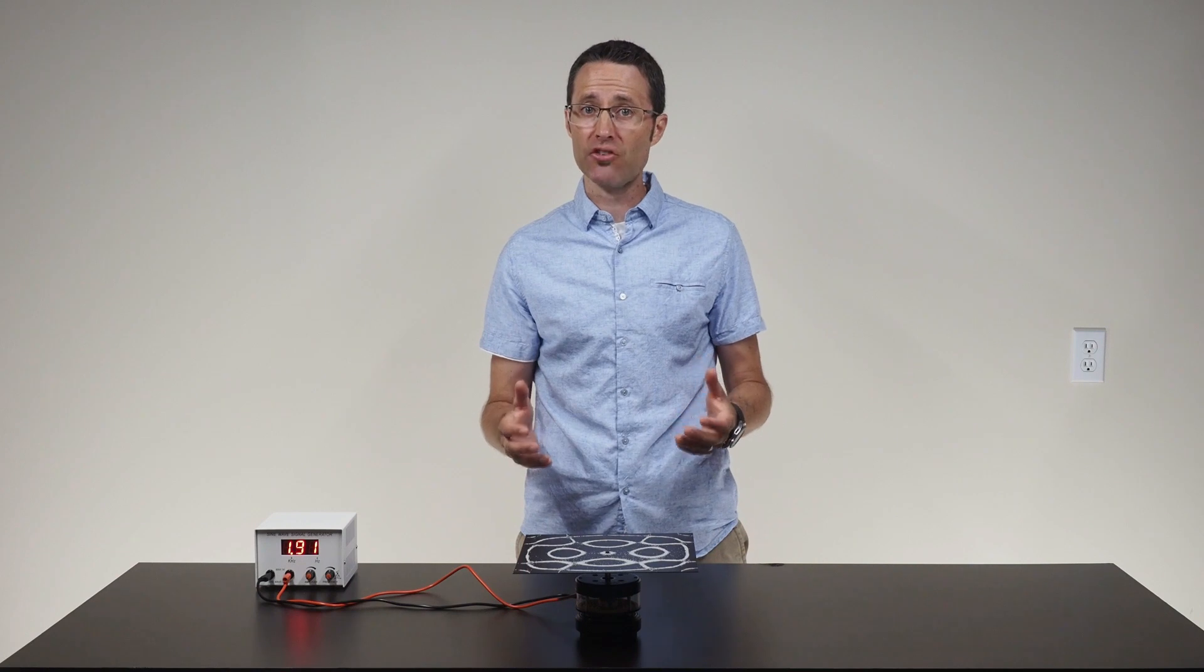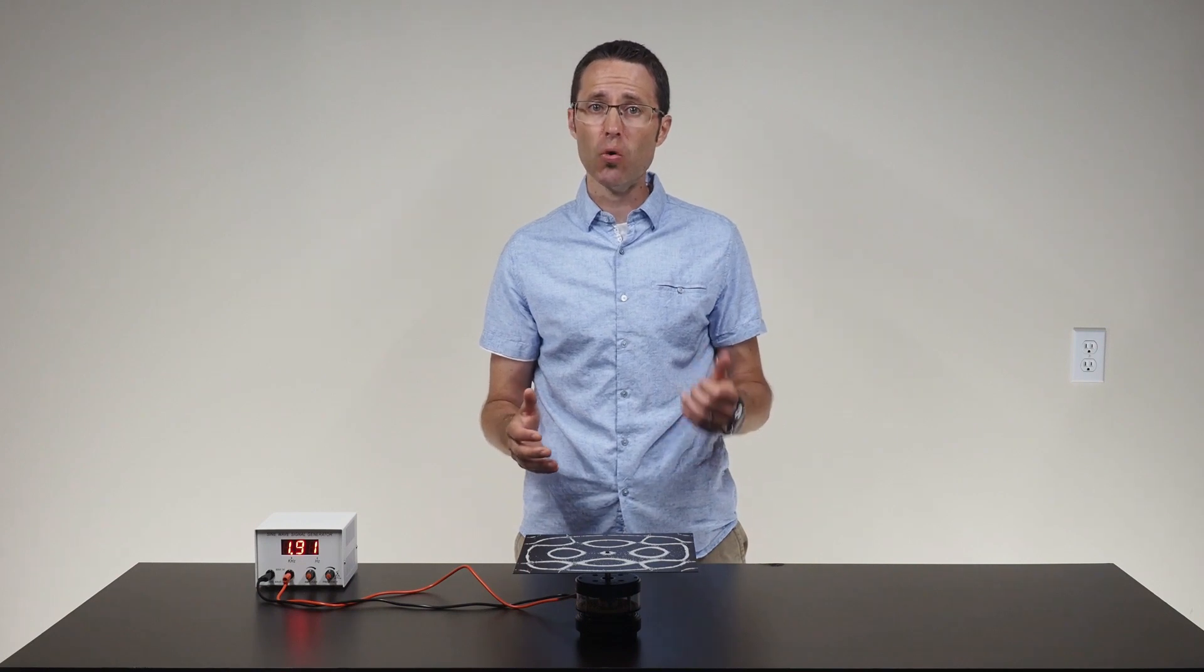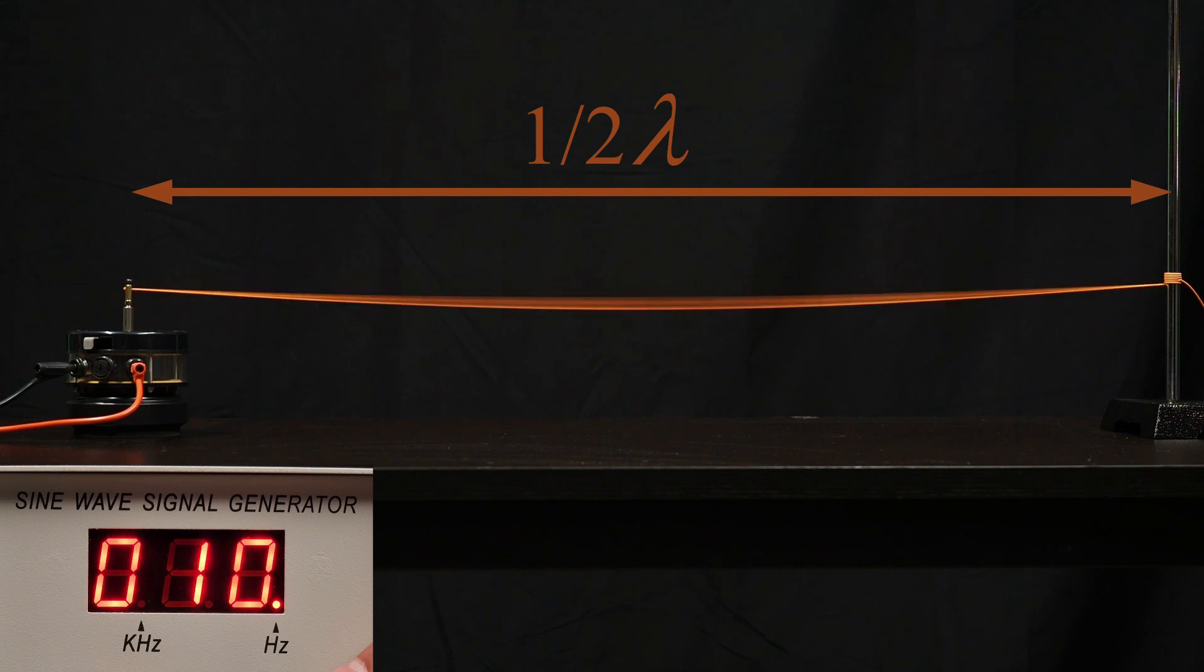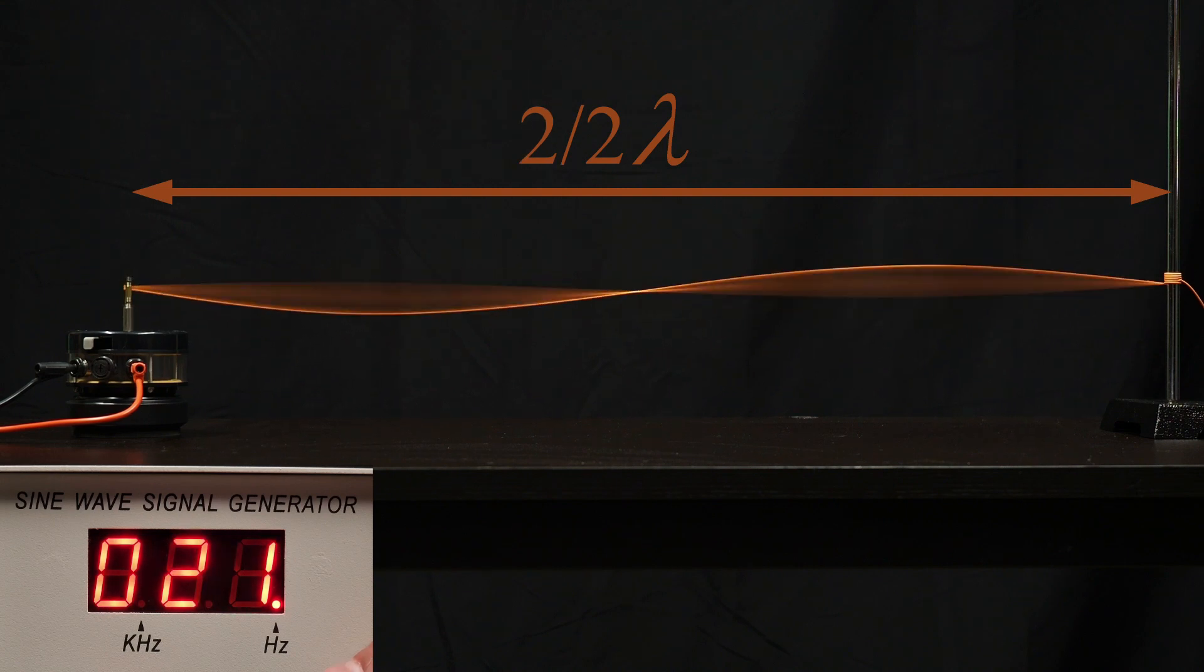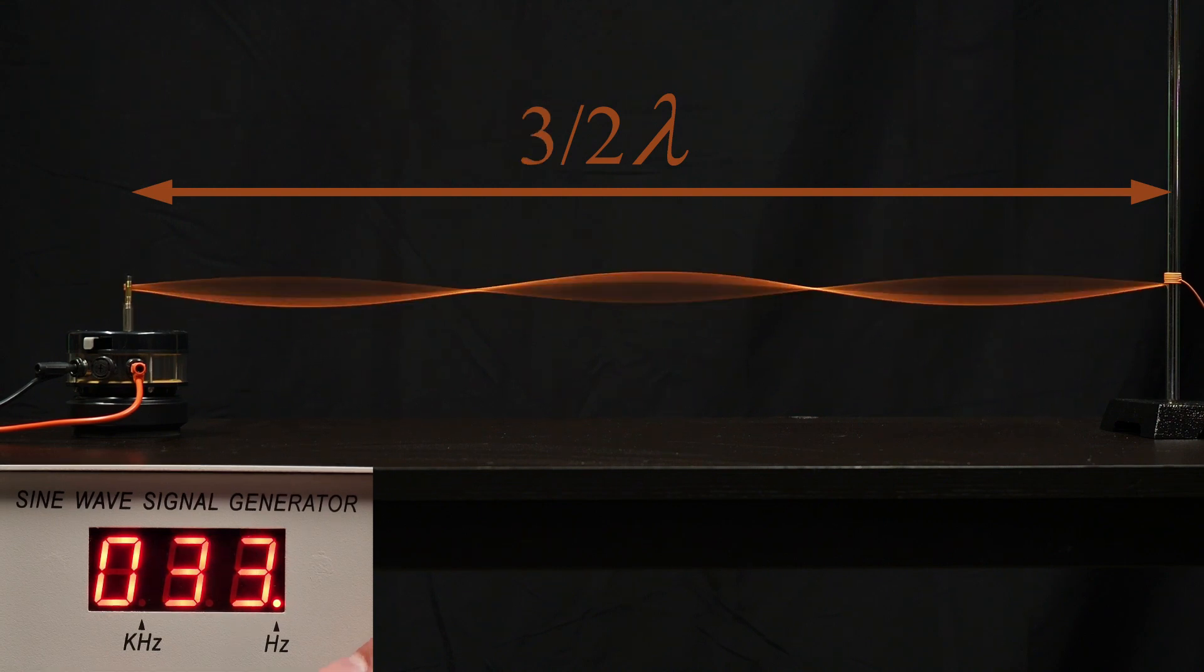Standing waves are created in a string with two fixed ends only when the string's length is equal to one half the periodic wavelength, or two halves of a wavelength, or three halves of a wavelength, etc.